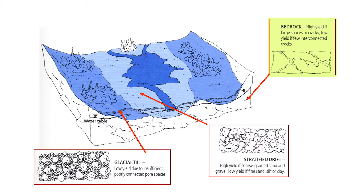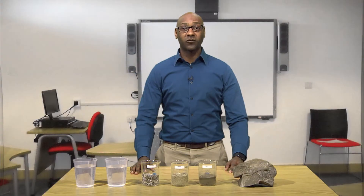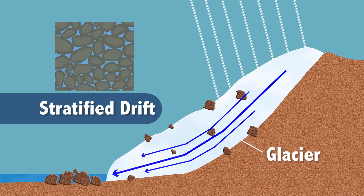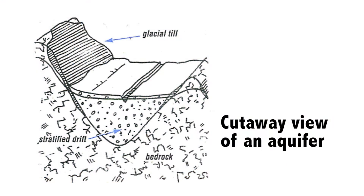Bedrock aquifers are different rock formations that hold water in the cracks and fractures of the rock. A stratified drift aquifer is comprised of layered deposits of sand and gravel that hold water between and around the individual grains of sand or gravel. Water yields of millions of gallons per day are possible from thick saturated deposits of sand and gravel. Stratified drift was deposited by glacial melt waters during the last ice age and are concentrated in the major river valleys.